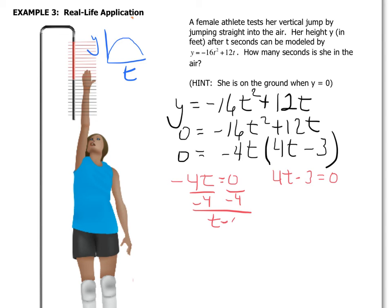t equals zero, which makes sense because when we start the jump that's when the clock starts. And I come over here and I say plus 3, 4t equals 3, divided by 4, t equals 3/4.